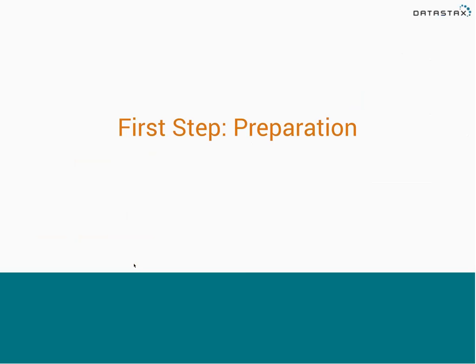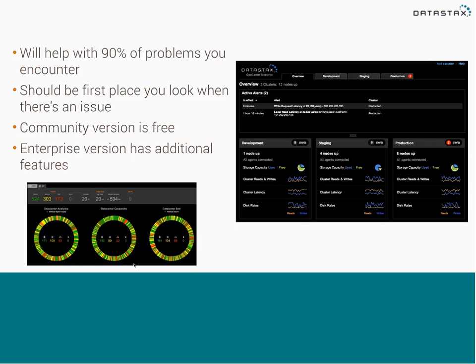The first thing we're going to talk about is preparation. If you haven't put Cassandra into production yet, these are the things you're going to want to know about. Take care of these things, take some notes, and make sure that you're ready for production and understand what's happening on your system. The first thing that's really important to put into place is OpCenter. OpCenter comes from DataStax, and it's basically a custom-built operations tool meant specifically to tell you what's going on with Cassandra.